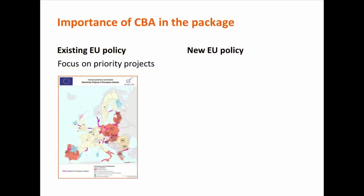What about the importance of cost-benefit analysis in this package? Remember that the existing EU policy on infrastructure was the TEN-E networks program — the trans-European networks program — and it already focused EU policy on certain priority projects. These priority projects have had different names and labels, like projects of common interest, priority projects, and projects of European interest. About 550 of these projects received such a label, and 42 received the more exclusive label: projects of European interest.